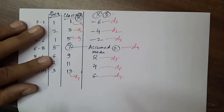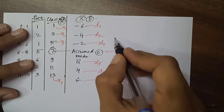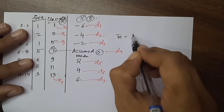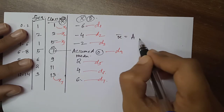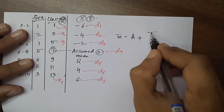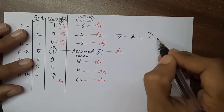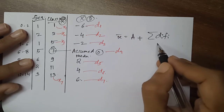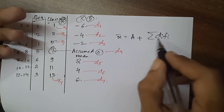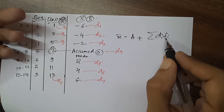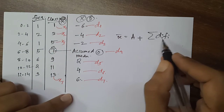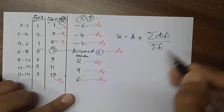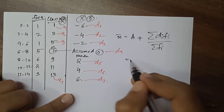The formula for the assumed mean method is: x-bar = assumed mean (a) + summation of di·fi, divided by summation of fi. Instead of multiplying xi·fi, you use the deviations di·fi. This formula is what we need to apply.